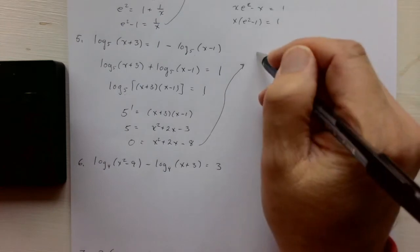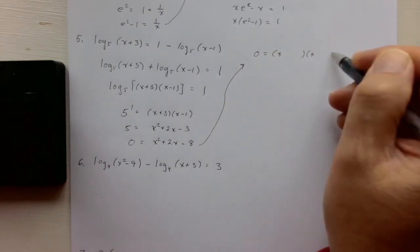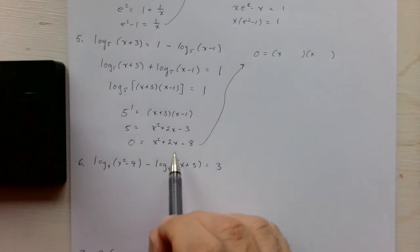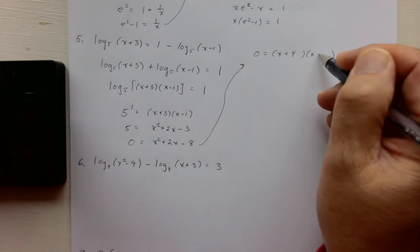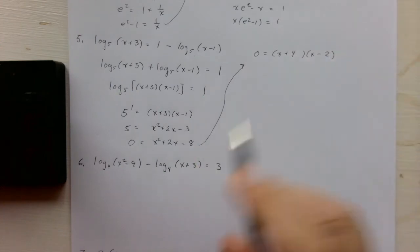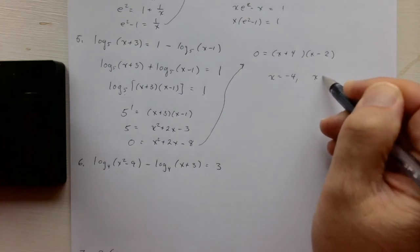Once again, you can use the quadratic formula or you can factor. We're lucky that this factors nicely, because this is x plus 4 and x minus 2. So I get x equals negative 4, x equals 2.